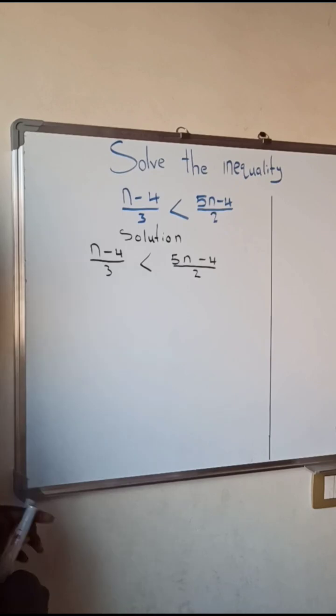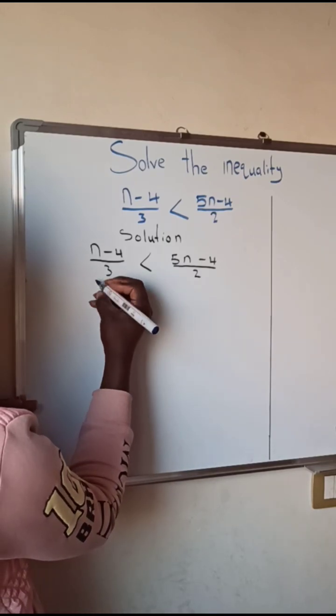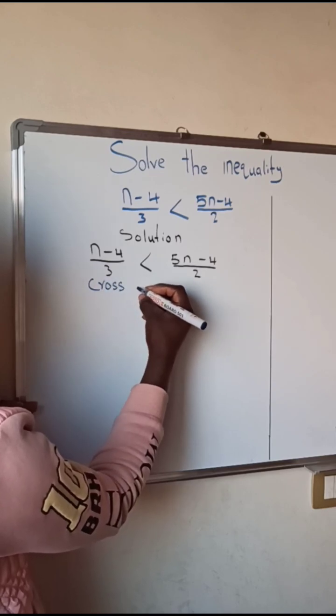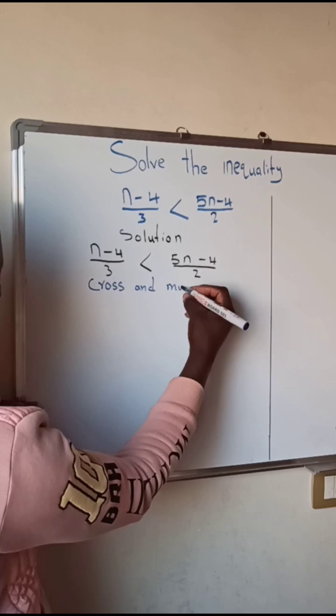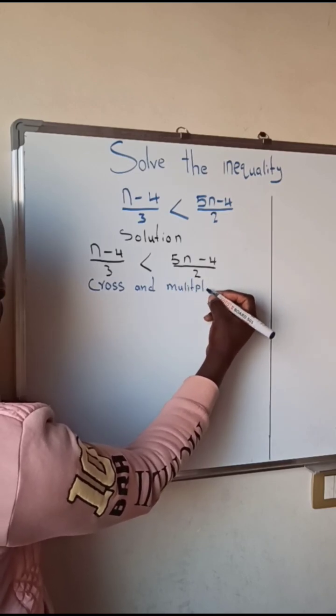So here we're going to cross and multiply. We are going to cross and multiply.